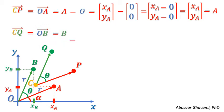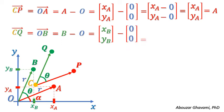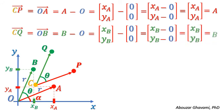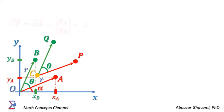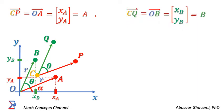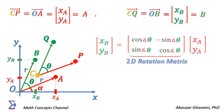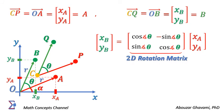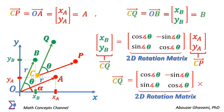The coordinates of vector OB are derived as coordinates of its head point B minus the tail point origin, equal to xB and yB, which is simply the coordinates of point B. We showed that coordinates of vector CP equal coordinates of point A, and coordinates of vector CQ equal coordinates of point B. We also showed that coordinates of point B are derived as the 2D rotation matrix times the coordinates of point A. Substituting vector CQ with point B and vector CP with point A, we have vector CQ equals the 2D rotation matrix times vector CP.